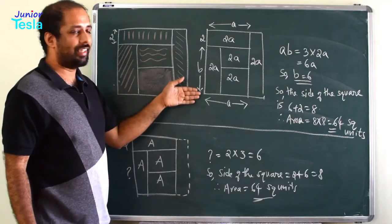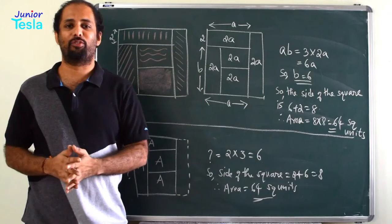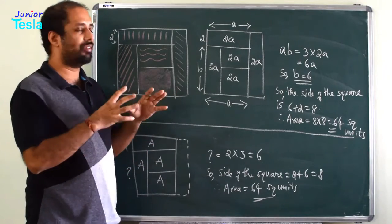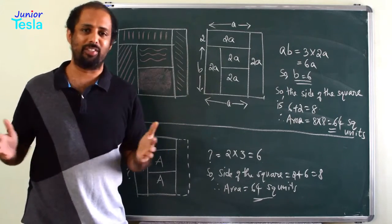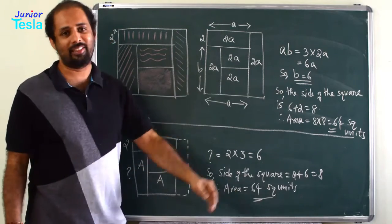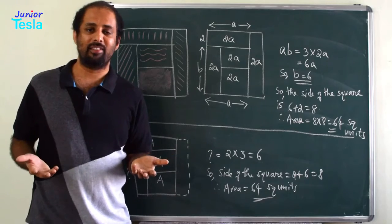Now, you can tell what is the length, that is 8 and you can tell what is the area, that is 8 into 8, 64 square units. So, this is one method without any algebra, without any equation, without any comparison. You can straight away get the answer. The length is 8, so the area is 64.